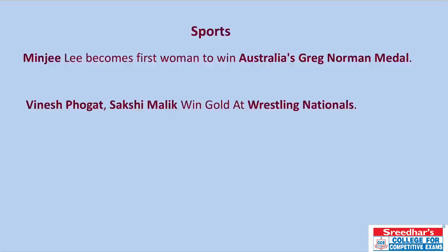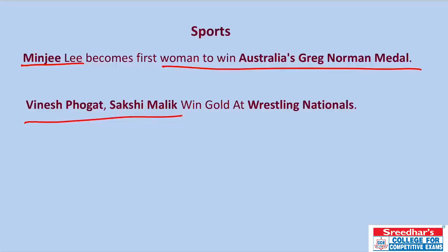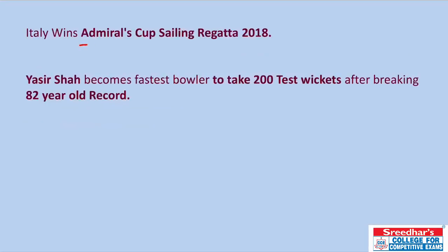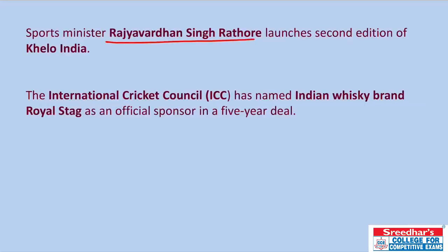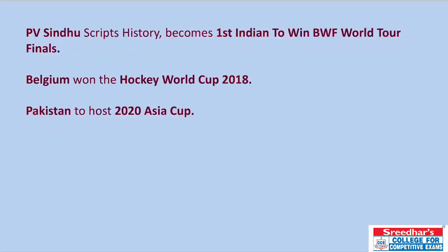In sports news: Minzy Lee has become the first woman to win Australia's Greg Norman Medal. Vinesh Phogat and Sakshi Malik both won gold at wrestling nationals. Italy has won the Admiral's Cup Sailing Regatta 2018. Yasir Shah became the fastest bowler to take 200 Test wickets, breaking an 82-year-old record. Rajyavardhan Singh Rathore, the Sports Minister, launched the second edition of Khelo India. The International Cricket Council has named Indian whisky brand Royal Stag as official sponsor in a five-year deal.